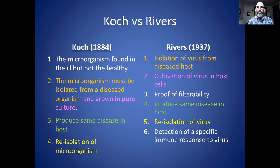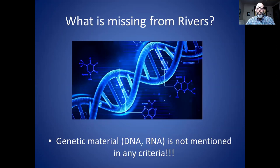The fifth criterion is re-isolation of the virus from the person in whom you produced the disease. And finally, the sixth criterion is detection of a specific immune response to the virus, which is more difficult to prove because of the specificity issue — I consider this the least important of the criteria. Notably, Rivers' criteria contain nothing about genetic material, DNA or RNA. So you don't even have to look at genetic material to prove these criteria; specific sequences have no formal role in proving that a virus causes a disease.